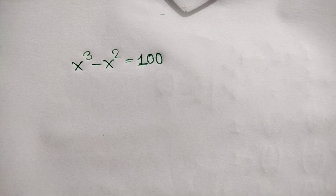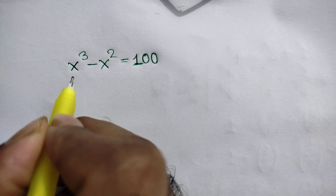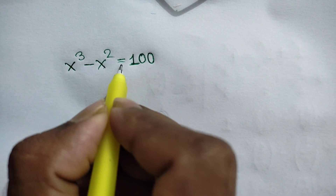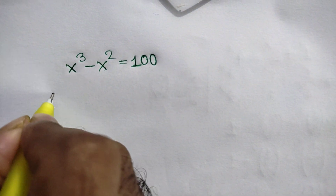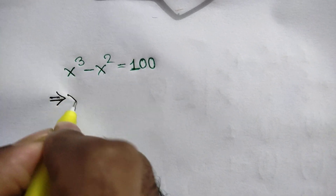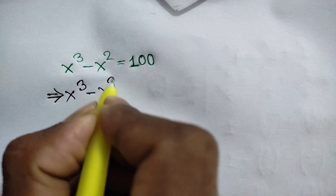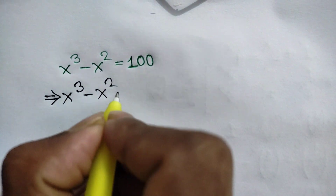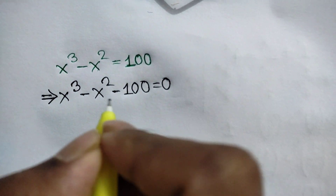Hi everyone. In this video I am going to show how to find the value of x where x³ minus x² is equal to 100. At first we can write x cube minus x square, and taking 100 to the left side we will get x cube minus x square minus 100 is equal to 0.